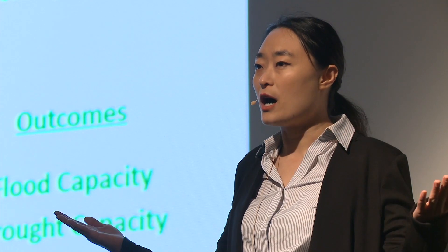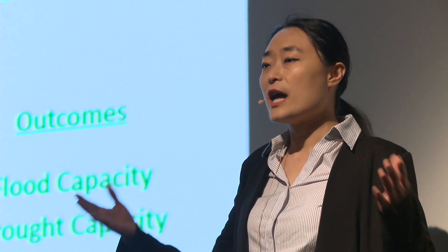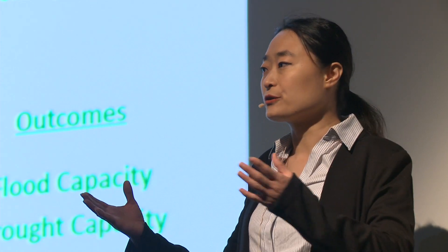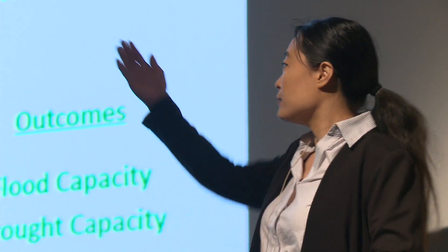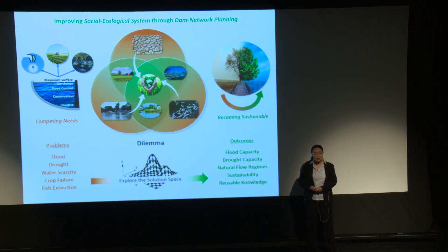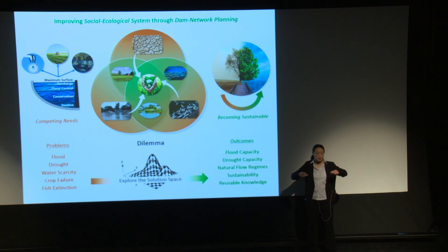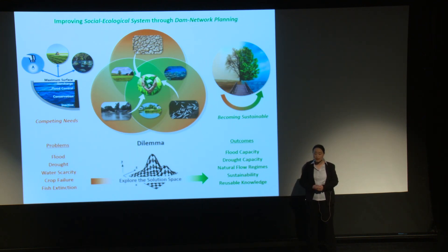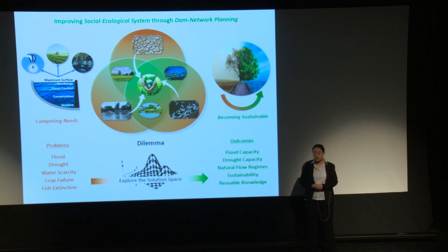So what is wrong? We have multiple user groups in a dam network: residents, farmers, fish, and so on. The problem is that there are always discrepancies between water supply and water demand for each user group. And those discrepancies cause the floods, the drought, and the extinction of some species.